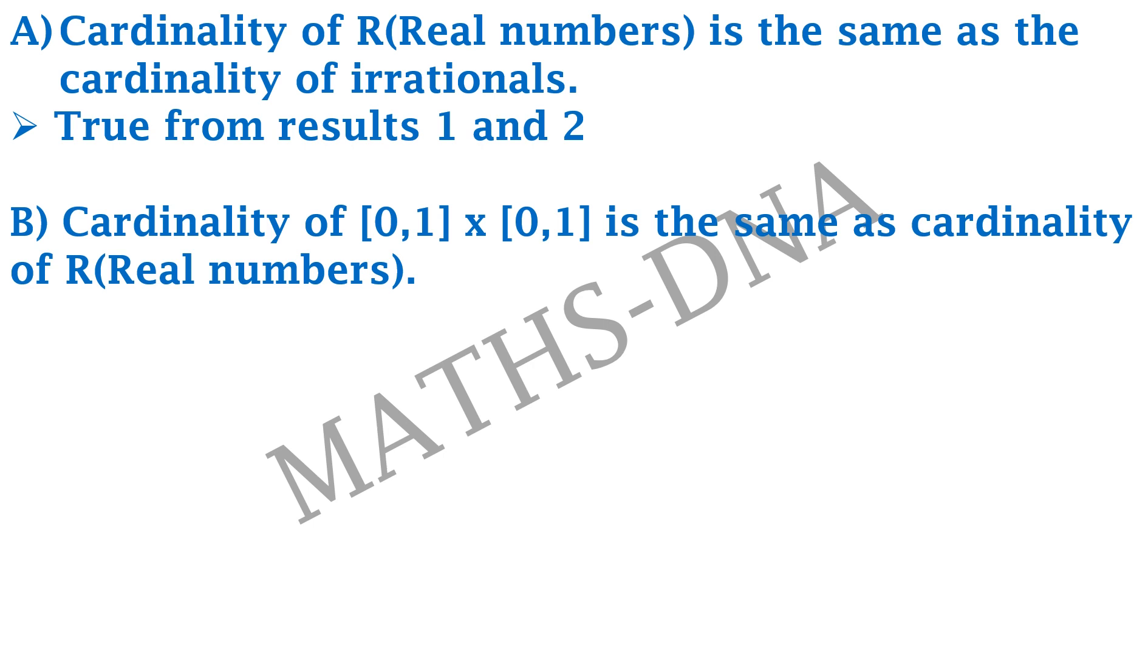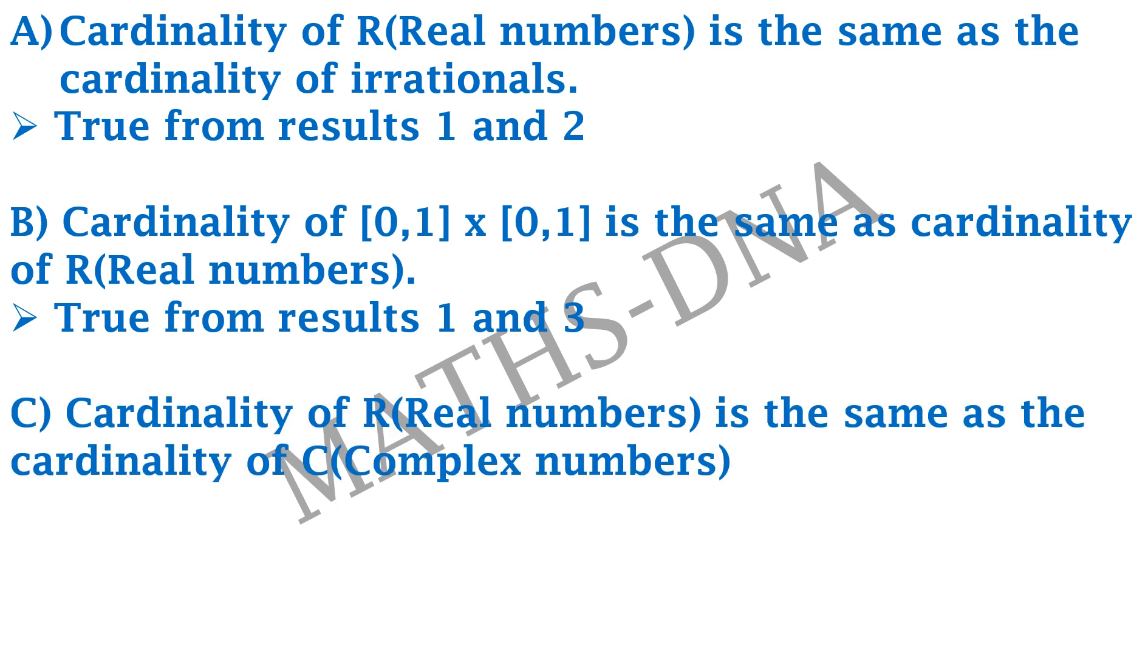Second, cardinality of [0,1] × [0,1] is same as cardinality of R, that is, set of real numbers. Here, it is again correct from the first and third result, which is C × C, because the cardinality of closed interval [0,1] is again C, that is continuum. So, continuum cross continuum will again give you a cardinality continuum.